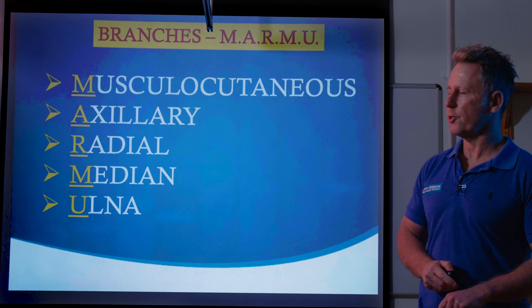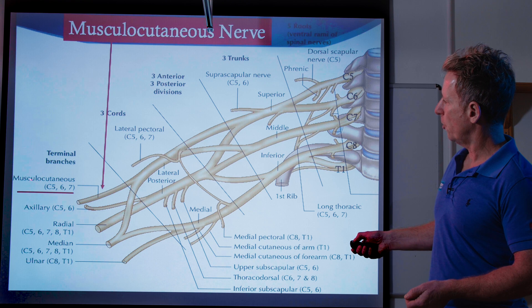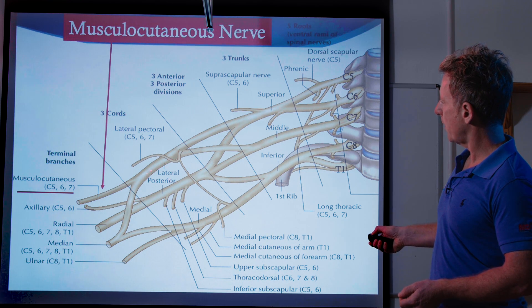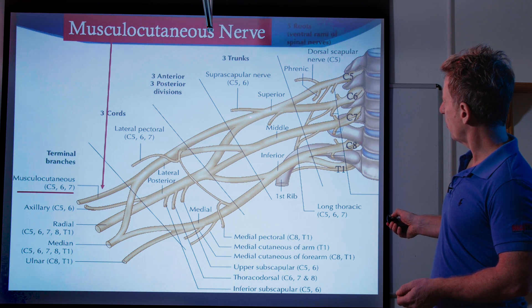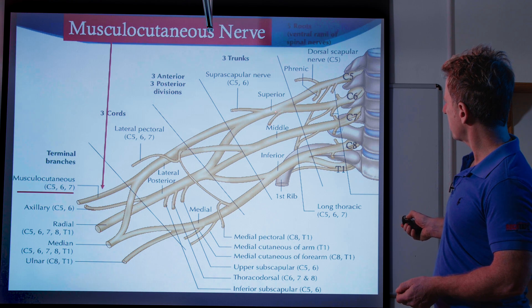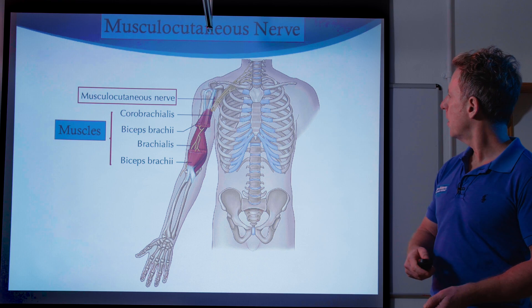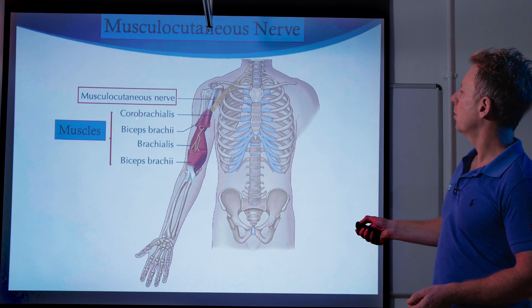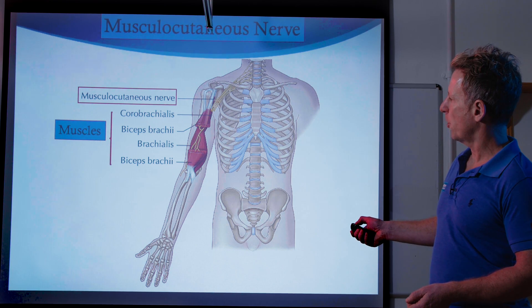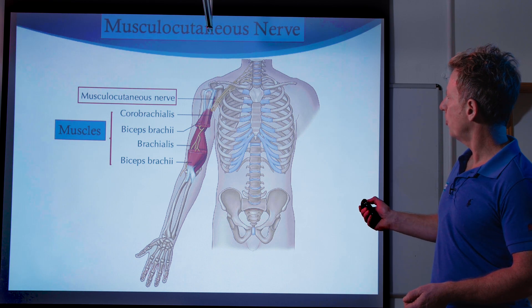Let's look a little bit closer at the musculocutaneous nerve. You can see the nerve to the left, musculocutaneous underlined, coming off as a continuation of the lateral cord, which comes from the anterior division, which comes from the superior trunk — roughly the C5 and C6 area and a little branch of C7. The three muscles it supplies are the coracobrachialis, the biceps brachii, and the brachialis.